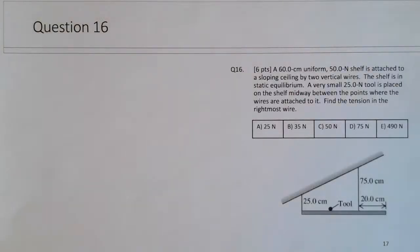Okay, so in question 16, there's another static equilibrium problem. We've got a 60 centimeter uniform 50 Newton shelf, so we're given the weight of the shelf rather than its mass. So it's about 5 kilograms, and it's attached to a sloping ceiling by these two vertical wires.